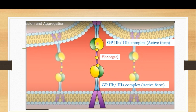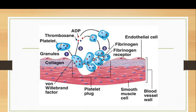When fibrinogen is released in response to platelet degranulation, it acts as a bridge connecting the active GP2B/3A complexes on adjacent platelets. So if this is one platelet and this is another platelet, their GP2B/3A complexes are activated by ADP, and the fibrinogen bridges these two complexes together — causing the two platelets to aggregate. This process occurs across all platelets, causing them to aggregate and form a platelet plug at the site of the blood vessel injury.